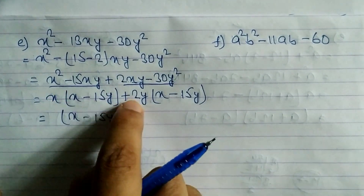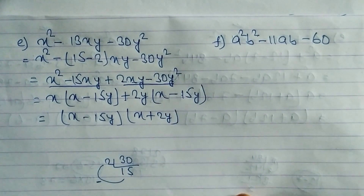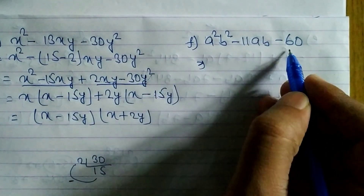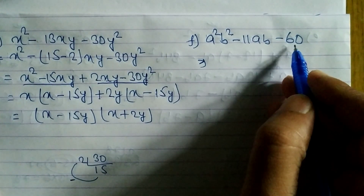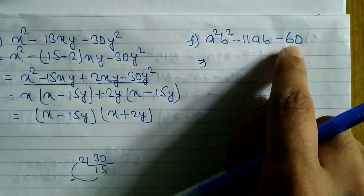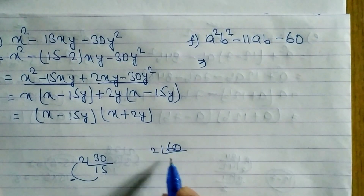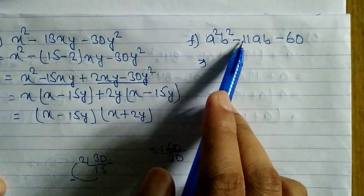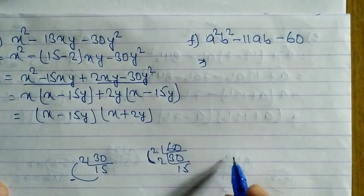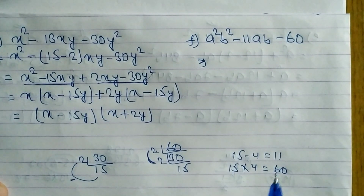The remaining factor is (x + 2y), so the answer is (x - 15y)(x + 2y). Now look at problem f: a²b² - 11ab - 60. We need factors of 60 with difference 11. Try 2 and 30: 30 - 2 = 28. Try 15 and 4: 15 minus 4 equals 11, and 15 into 4 equals 60.